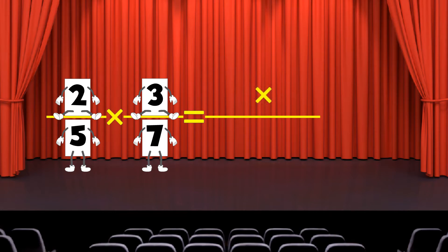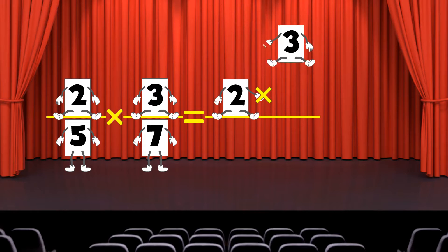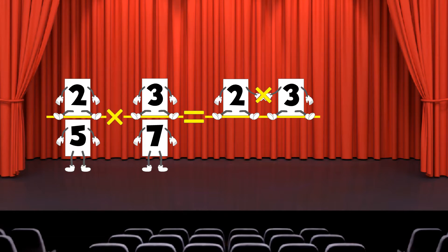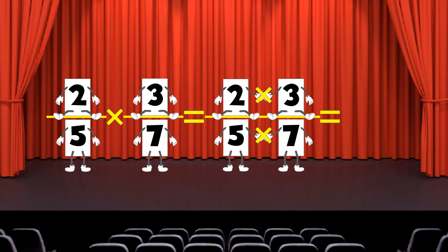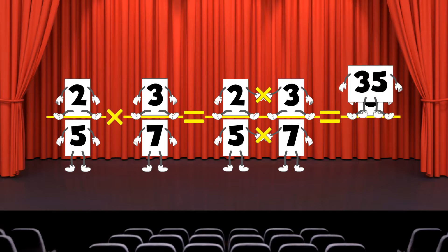First we multiply the top numbers, the numerators. So we multiply 2 times 3. Next we multiply the bottom numbers, the denominators. 5 times 7. And we get 6 over 35.